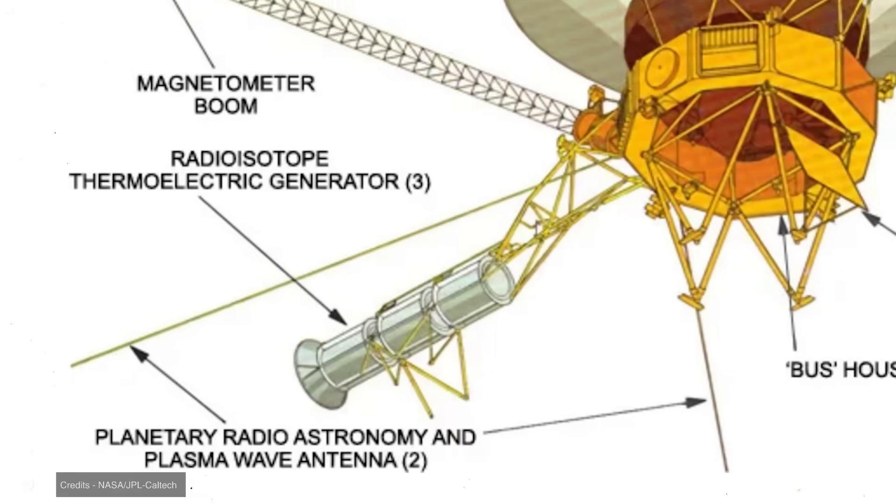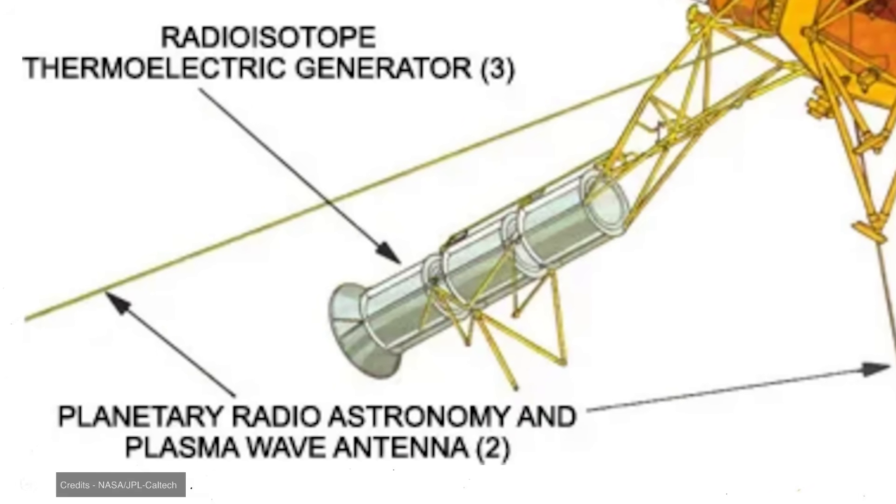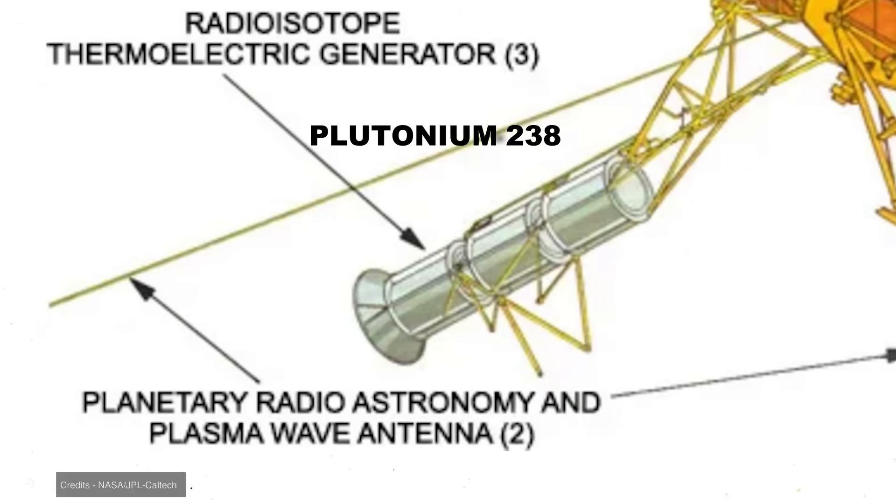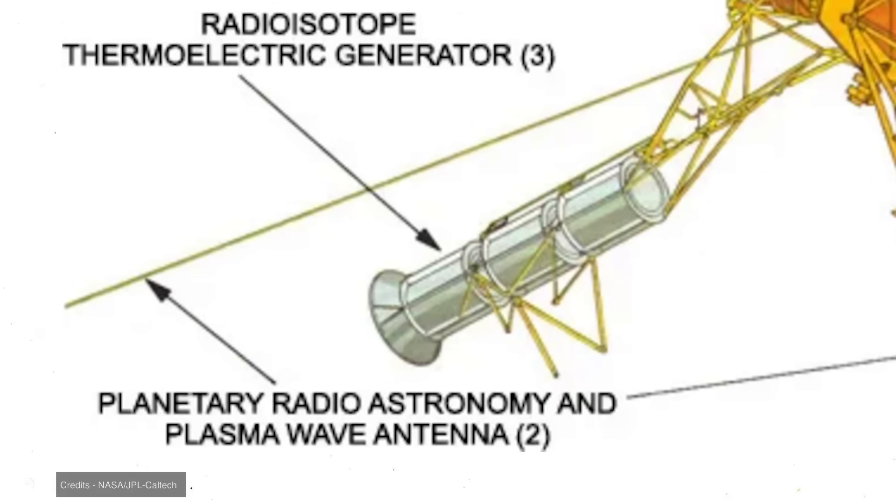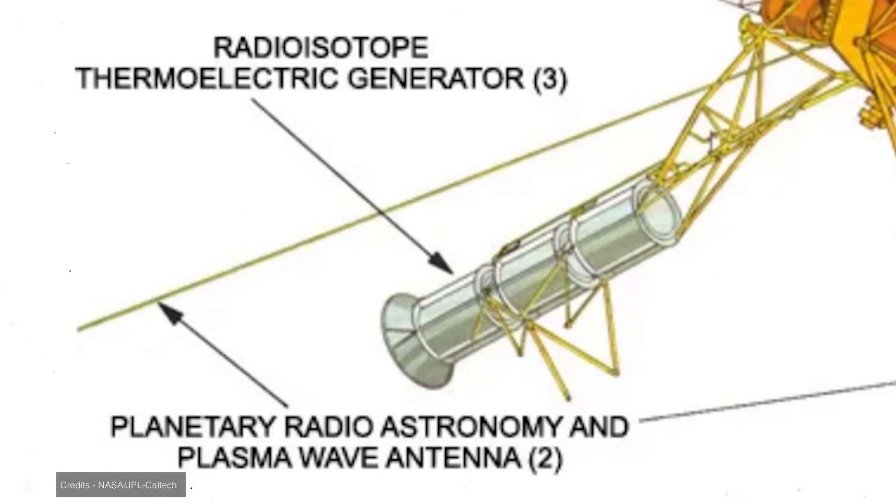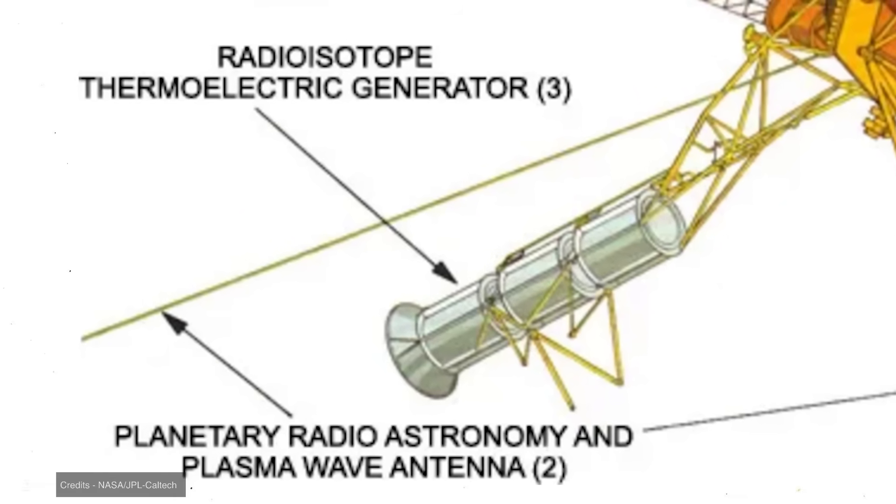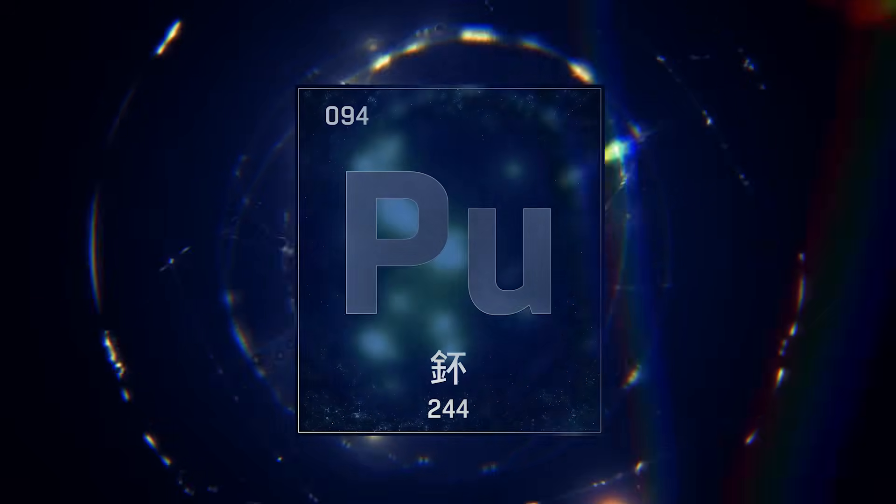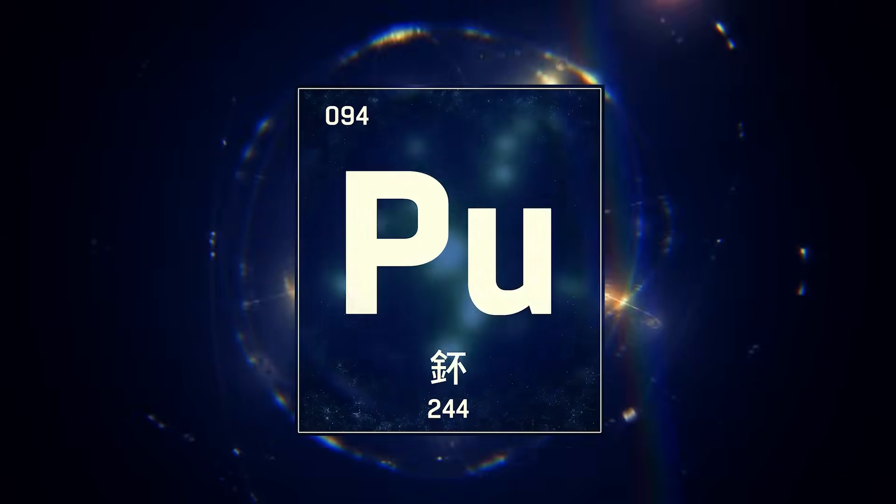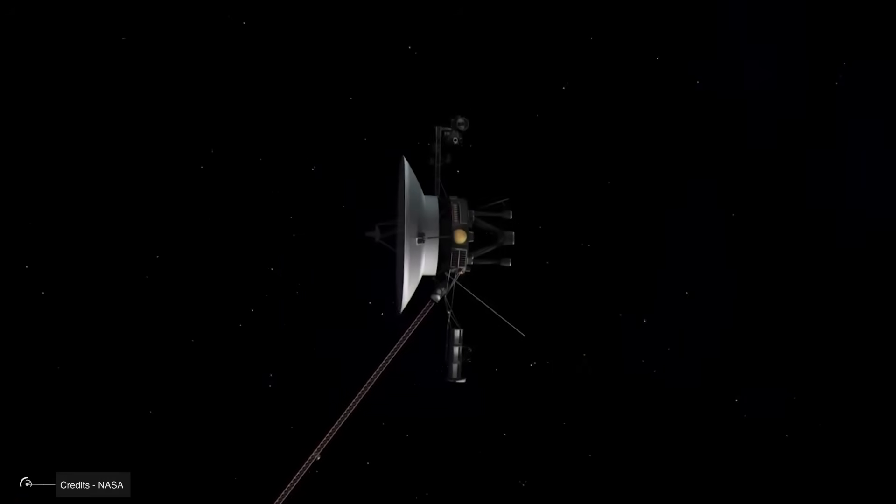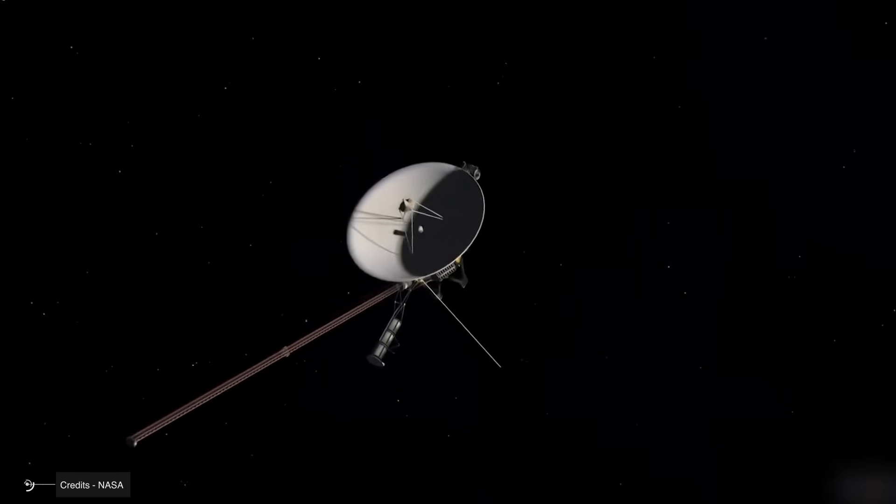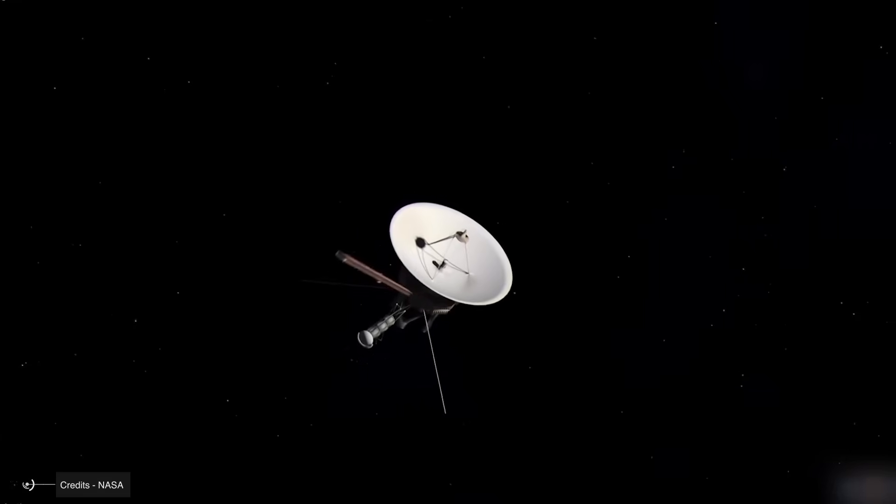Each Voyager is equipped with three RTGs, devices that convert the heat generated by the natural decay of plutonium-238 into electricity. These generators have no moving parts, are incredibly reliable, and were designed to operate for decades, though not forever. Over time, plutonium decays and its heat diminishes, meaning the Voyagers generate progressively less power. Currently, they produce less than a third of the electricity they generated at launch.